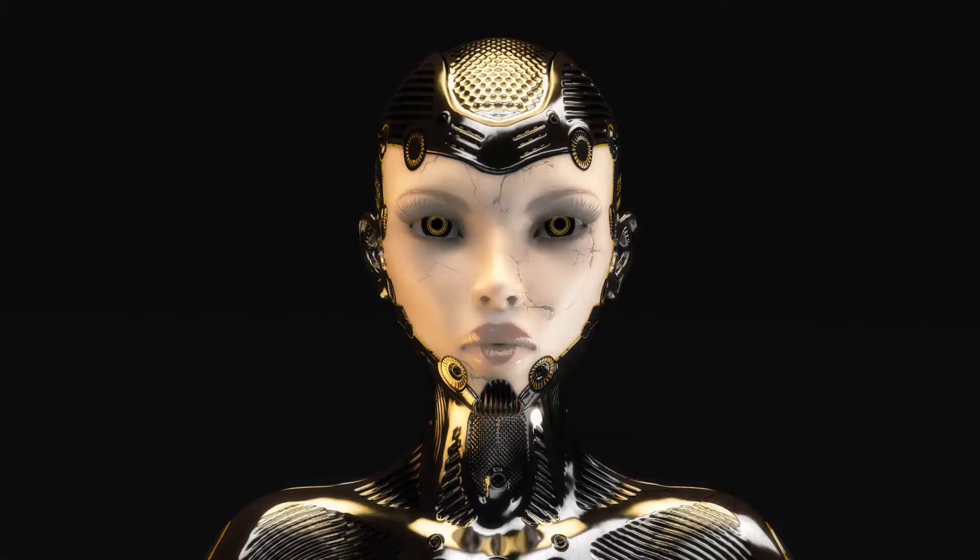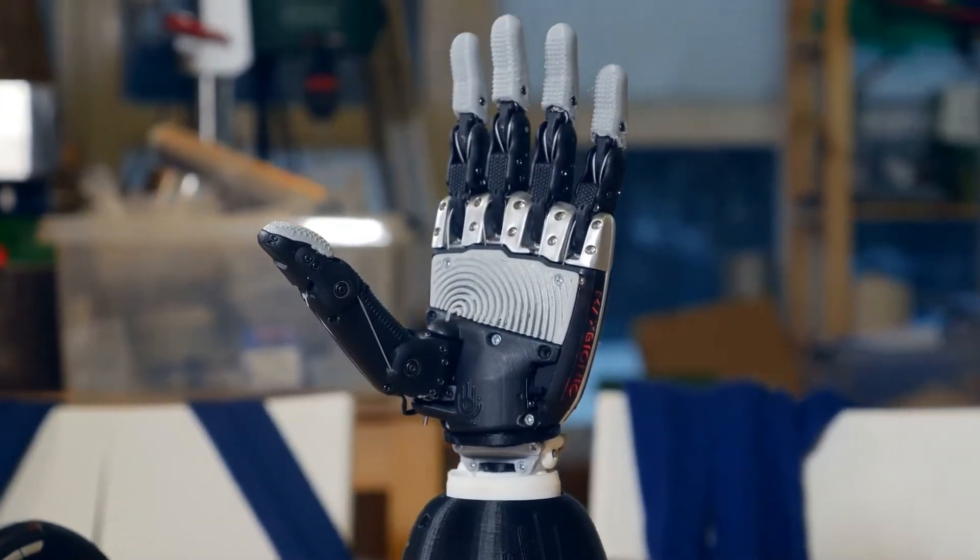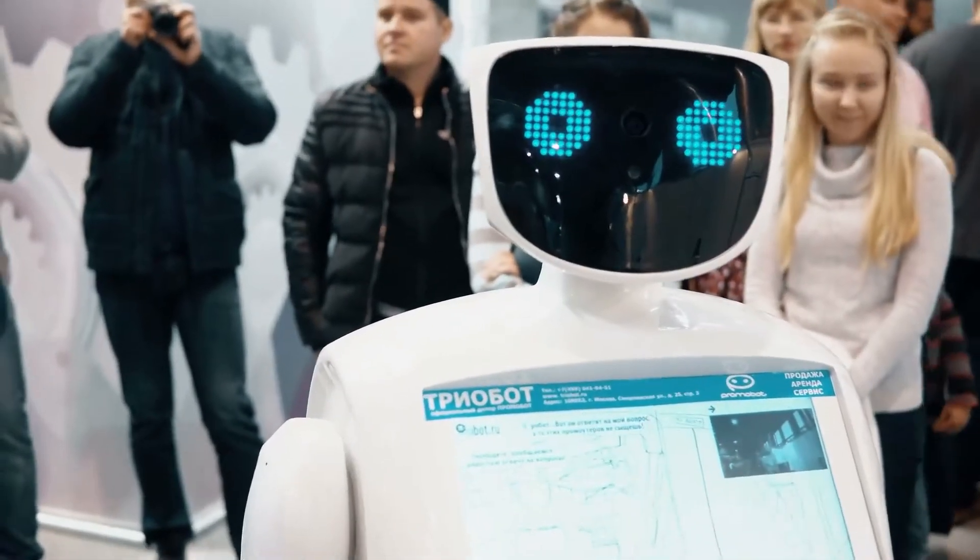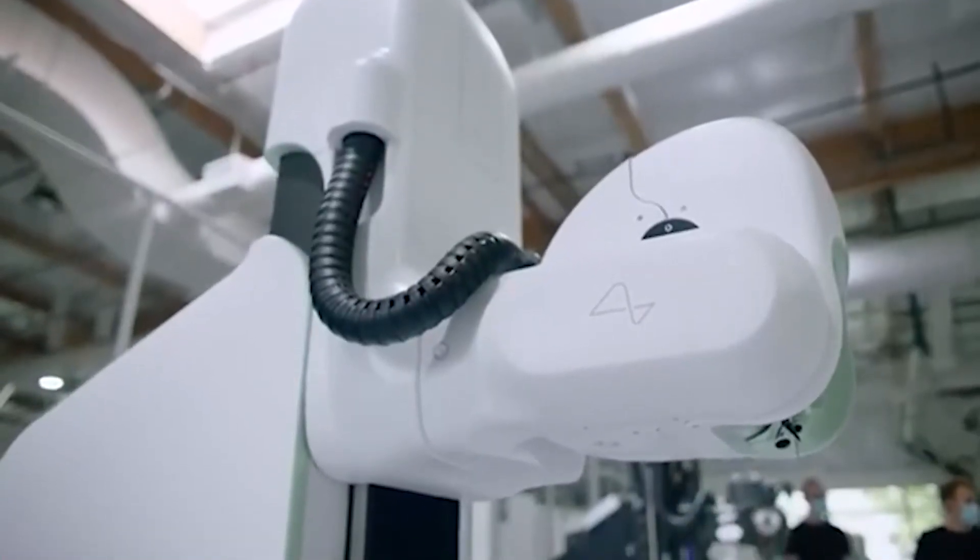Things are looking scary, and Elon knows that you cannot beat an artificial intelligence system considering the rate at which they progress. The only option is to join hands with artificial intelligence, and that's precisely what Neuralink is all about.